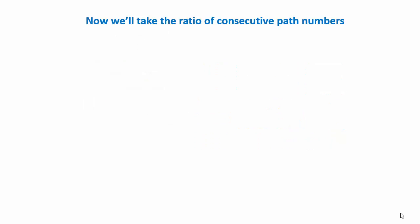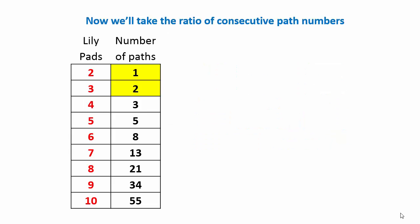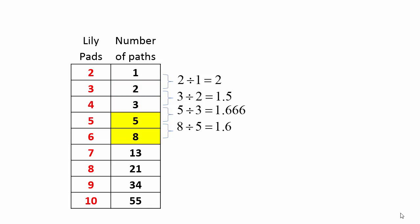Another interesting property is to take the ratio of consecutive numbers. The first two numbers are one and two, the ratio is two divided by one, which is two. The next ratio gives us one point five, and so on. Do you notice anything about the value of the ratio as we proceed down the sequence?